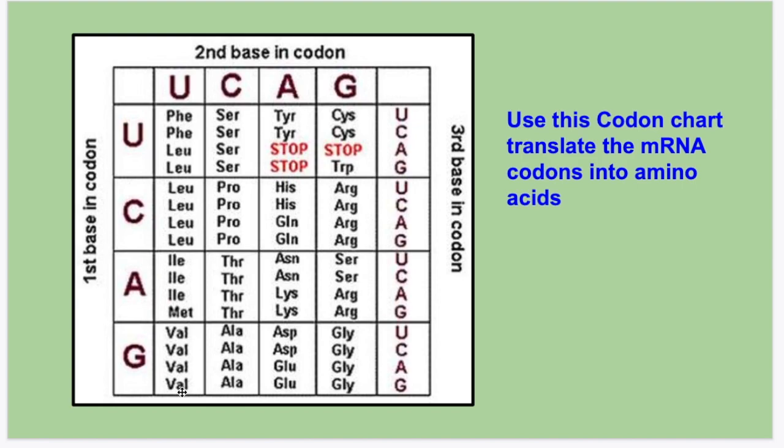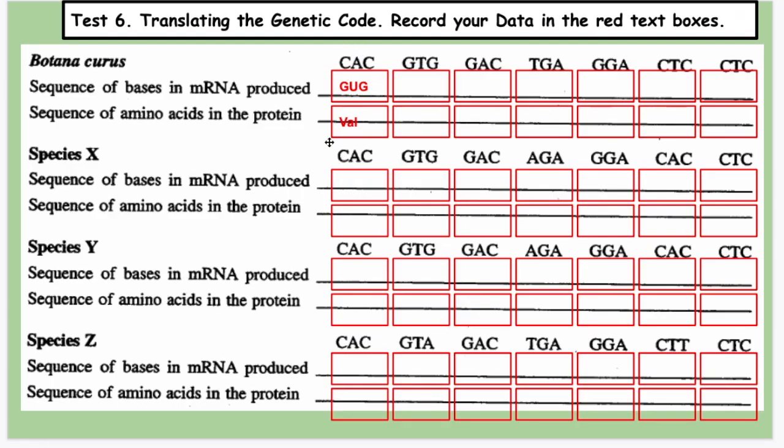So for the first box, it's CAC. The messenger RNA is GUG by the base pairing rules, and then it goes to the amino acid from that chart, which is VAL. So then you just fill in the rest of these. And then you count the number of differences that each one has compared to Botanicuris. The idea is the less the differences in the amino acids, the more closely related it is to Botanicuris.